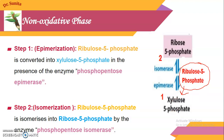The second reaction is isomerization. The second molecule of ribulose-5-phosphate, since three molecules were formed, is converted into ribose-5-phosphate with the help of the enzyme isomerase.